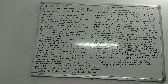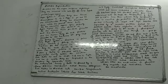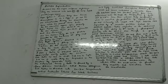Each testis is oval in shape, around 4–5 cm in length and 2–3 cm in width. The testis are suspended in the scrotum by cords called spermatic cords. The outermost covering of the testis is formed by a dense fibrous membrane called the tunica albuginea.